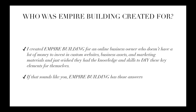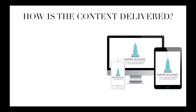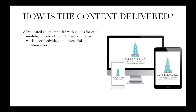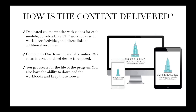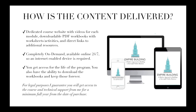How is the content delivered? Empire Building has a dedicated course website with videos for each module, downloadable PDF workbooks with worksheets and activities, and direct links to additional resources. It is completely on demand, available 24/7, so an internet-enabled device is required. You get access for the life of the program and also have the ability to download the workbooks and keep those forever. For legal purposes, I guarantee that you will get access to the course and technical support from me for a minimum full year from the date of purchase, but you will have the ability to download the workbooks and keep those forever, so you really do have the core content of the course for the rest of your life.